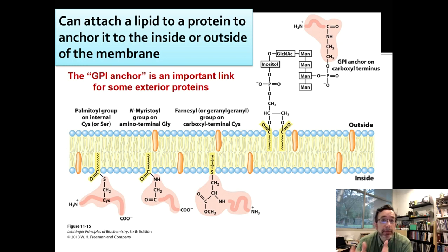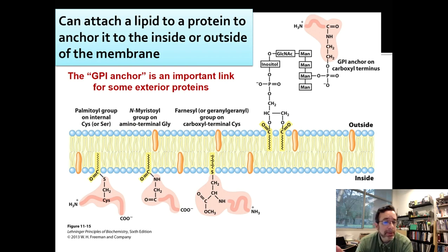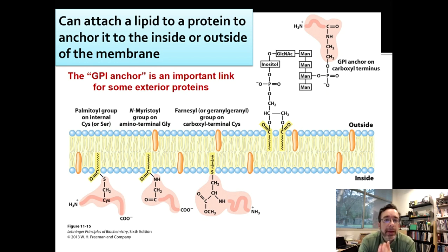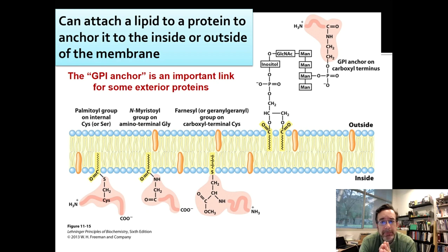We mentioned earlier that some proteins can be covalently linked to a lipid, and then that lipid can just hang out in the lipid bilayer like any other lipid, with the head group holding the protein in place. There are different kinds of linkages to different kinds of residues. The one important outside anchor you need to know is called the GPI anchor — it involves a complex double-headed lipid connected to an inositol group, mannose groups, and then through a phosphate to the protein itself.